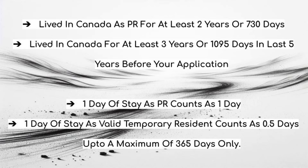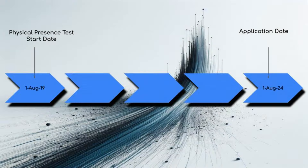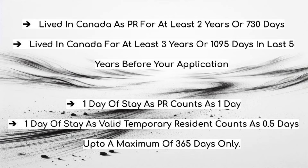Let me go at it again. So if you see here on the screen that I am sharing, there are four bullet points which explain the concept I am talking about. First thing: you need to consider only the five years preceding your application. So if you are applying on 1st of August 2024, your calculation would start from 1st of August 2019. Once you get your PR, every day you spend in Canada is counted as 1 day. You need to stay in Canada for at least 2 years as a PR to satisfy the physical presence requirement.